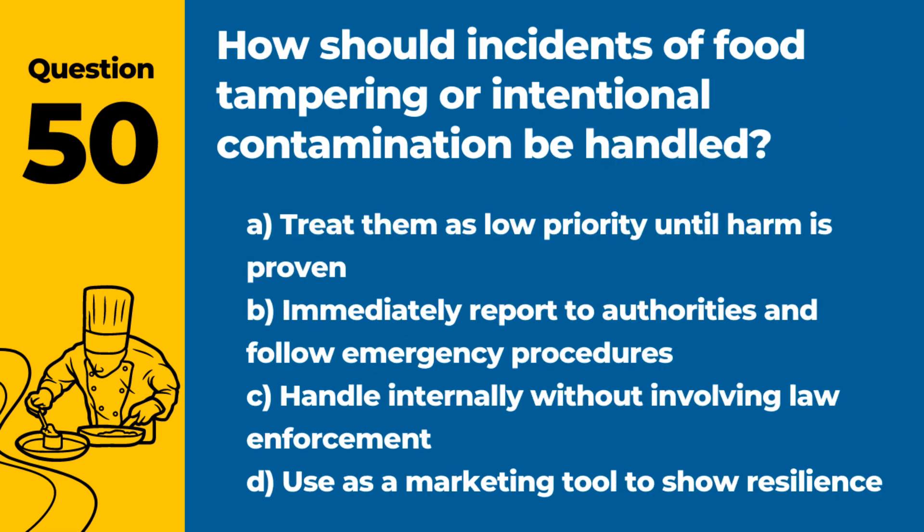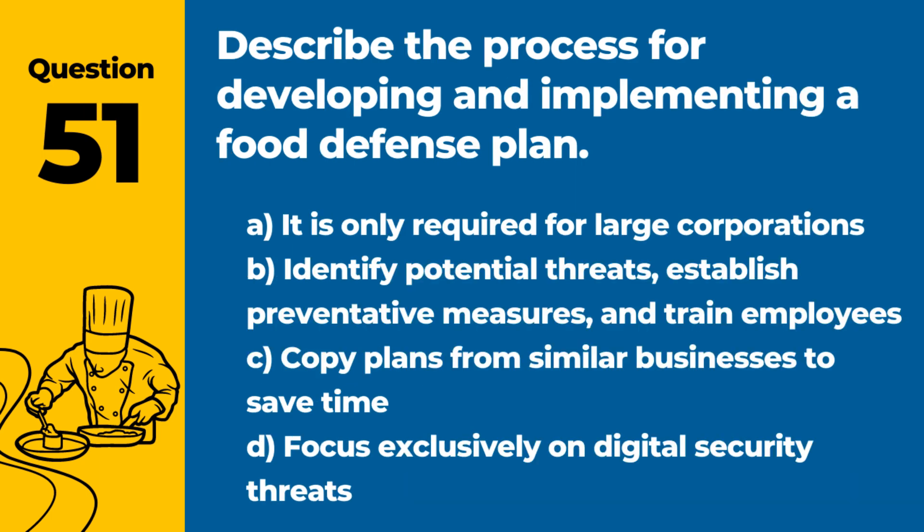Question 50. How should incidents of food tampering or intentional contamination be handled? Answer: B. Immediately report to authorities and follow emergency procedures. Swift action is necessary to protect public health and trust.